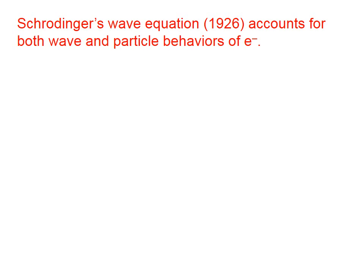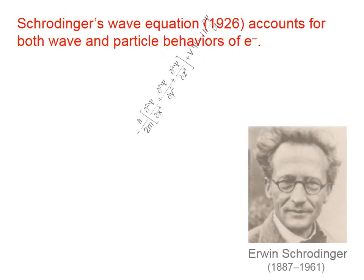Schrödinger's wave equation, 1926, accounts for both wave and particle behaviors of electrons.